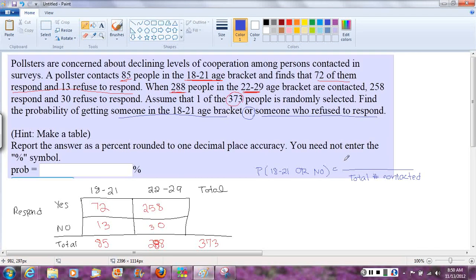So the number, there we go, the number of 18 to 21 year olds, plus the number of no's, minus the number of 18 to 21 year olds who said no. So let's fill in each of those numbers. The number of 18 to 21 year olds, we can see that total.